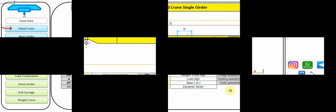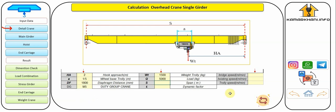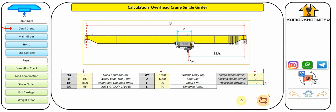In this step, you must enter your data. Be sure to pay attention to the unit when entering the data. The working group of the crane is very important, so for better and more accurate results, be sure to enter the working group according to the ISO standard. Longitudinal and transverse speeds are also very important because they are very effective for the accurate calculation of longitudinal rail size.